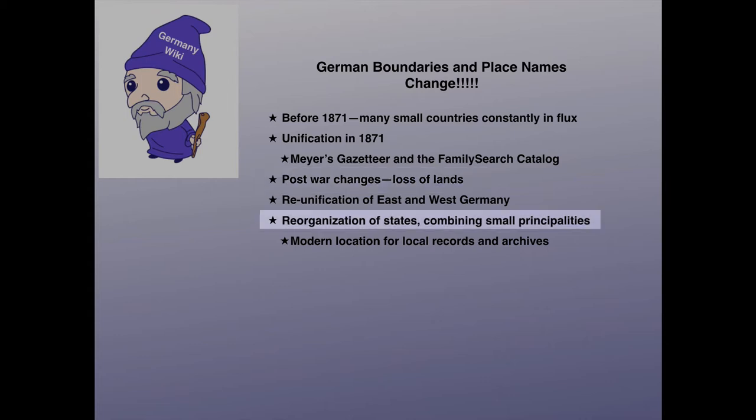All of the little principalities of Germany were reorganized into new states. The modern addresses within these 15 current states of Germany, and in parts of Germany now in other countries, are used when contacting churches, archives, or civil registry offices.